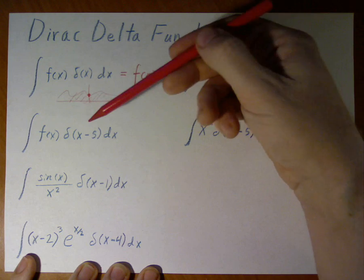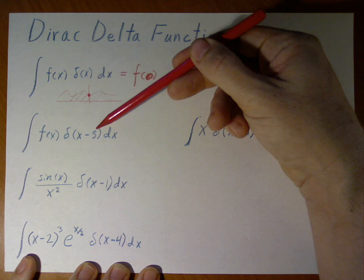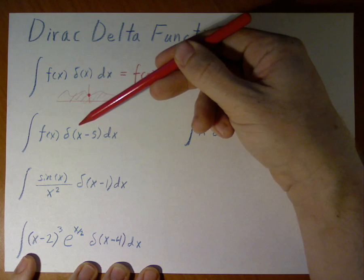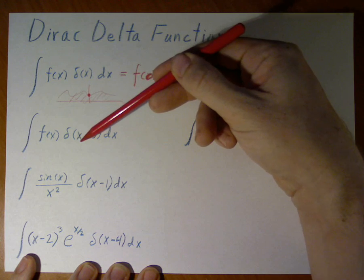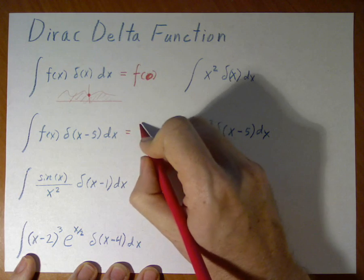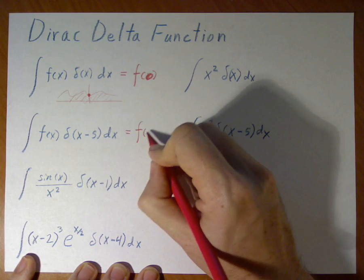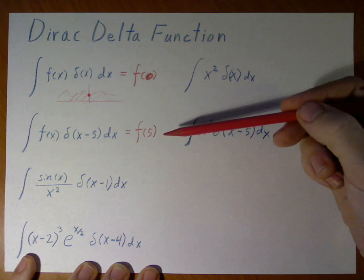If we integrate with a delta function at x minus 5, well, the delta function only has a value when it equals 0, so that only happens when x equals 5. It means we get an integral with f of 5. The entire integral equals this.